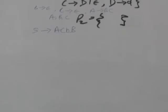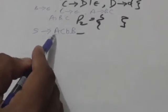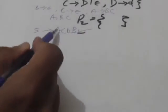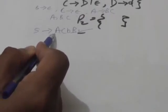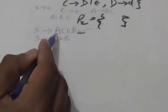After finding nullable variables, make a new set P2. Now process each production of set P to add rules to P2. First, consider the production S → ACBB. The right-hand side contains three nullable variables: A, B, and C. So we will add this production S → ACBB to set P2, along with all other productions obtained by deleting one or more nullable variables from the right-hand side in any combination.